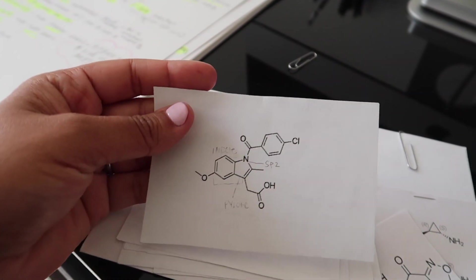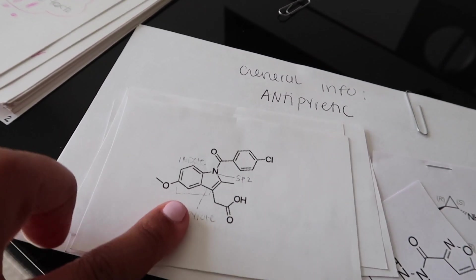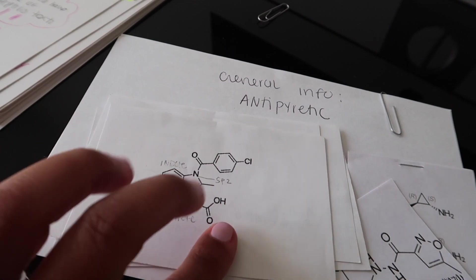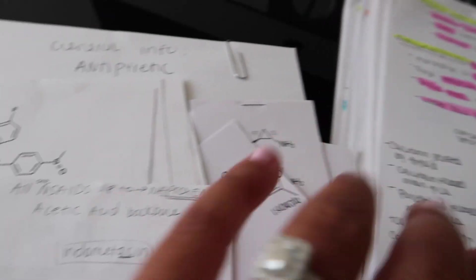I would print these drug structures from Wikipedia, because our professor loved using Wikipedia drug structures. I would print them out, cut them into little squares, and then I would fill out everything I had on the paper. I would transfer it over.